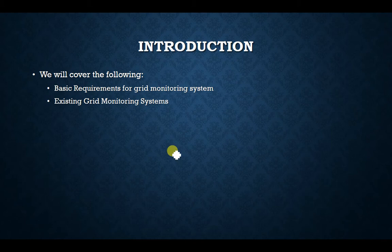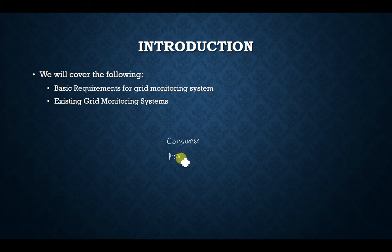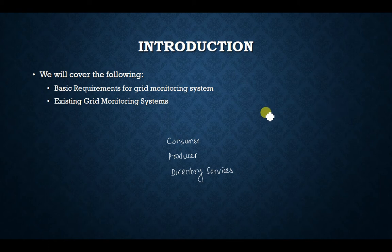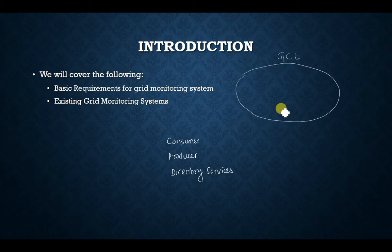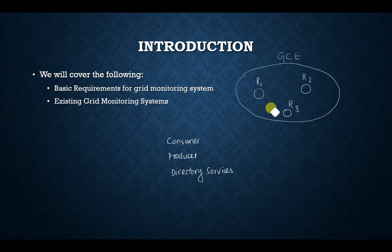In the previous talk on grid monitoring architecture, we said there are three components involved in a grid monitoring system: the consumer, the producer, and the directory services. In a grid computing environment, there are several resources — R1, R2, R3, and so on.